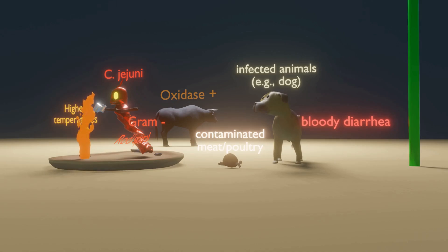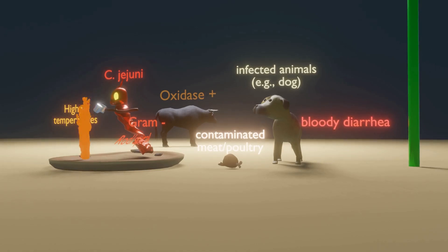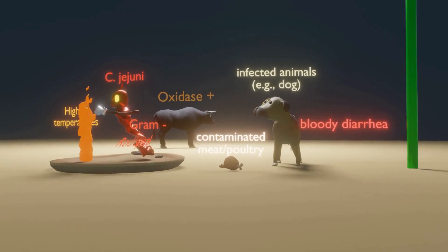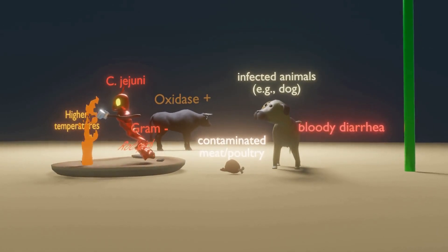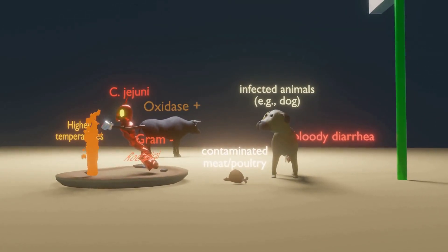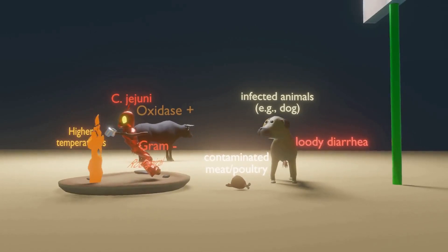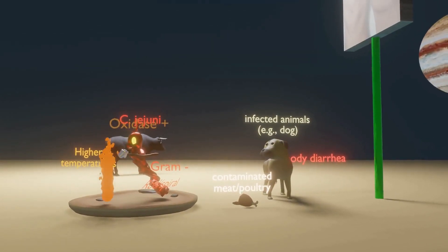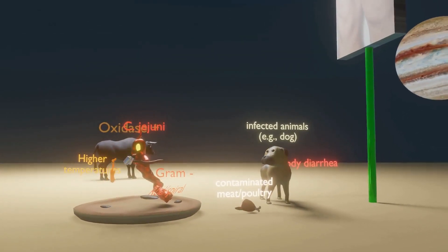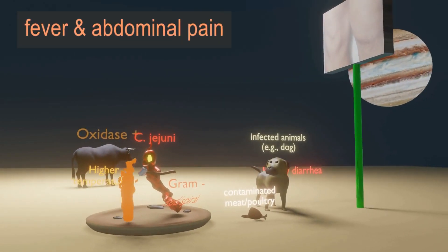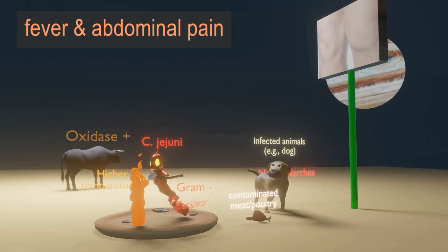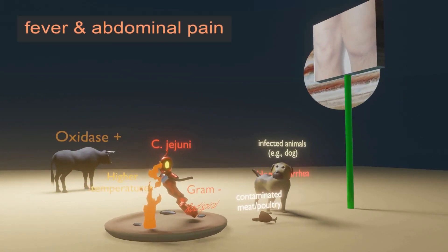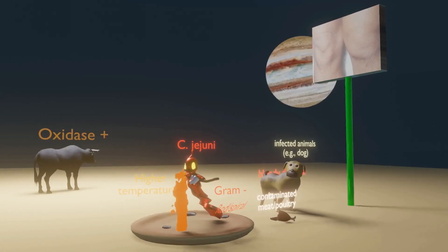Similar to Shigella, Salmonella, and Yersinia, we see an inflammatory bloody diarrhea. After ingestion, Campylobacter colonizes the intestinal mucosa, enters enterocytes within endocytic vacuoles, and causes cell injury — this is what leads to the diarrhea. Patients may also develop fever and abdominal pain.